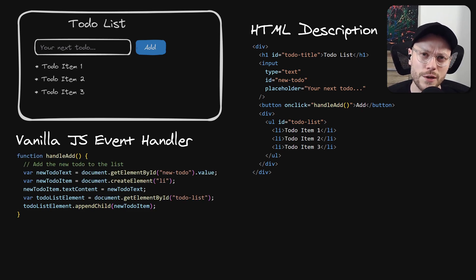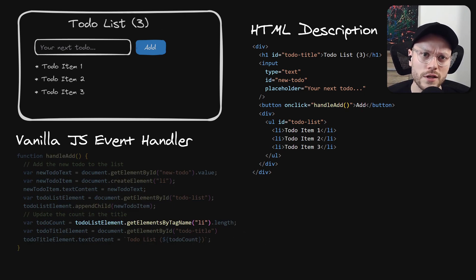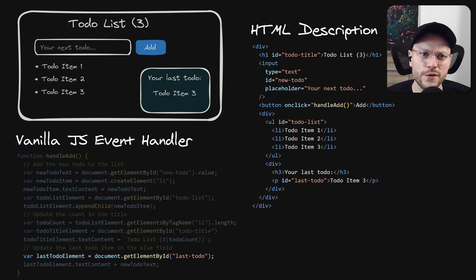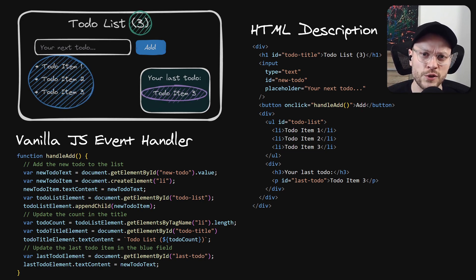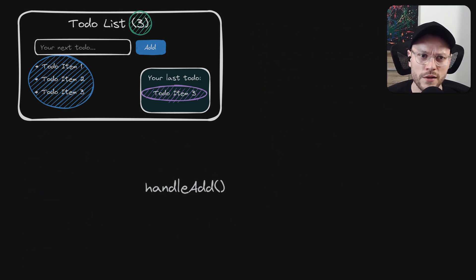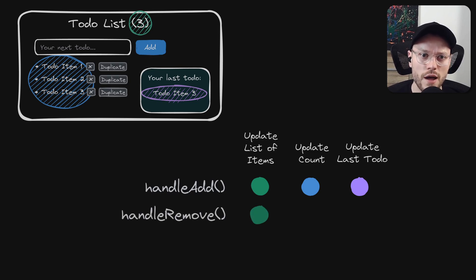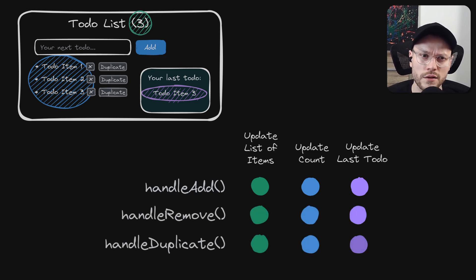It doesn't look that terrible yet, but of course our app will grow over time. Now we also want to display the total count of items, so we have to get all the list elements and count them, then find the title DOM element and update it with the total count. Next feature: we also want to display the last item's name in the corner. So our handler needs to find the DOM element and update it with the new name. The problem is that our state is spread across three different places in the DOM itself. Each DOM node acts as a separate state container, so every time we add a new element to our static HTML, we must remember to update it in our existing event handlers.